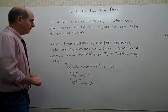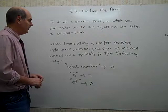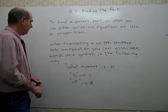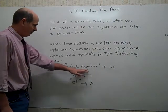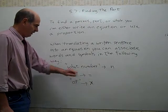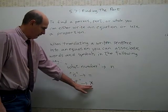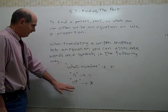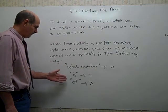If you're going to write an equation, you have to do some translating, and there are certain keywords that most of the time do appear in a sentence that explains the conditions of the problem. When translating a written sentence into an equation, you can associate words and symbols in the following way: 'what number' means pick a letter, commonly N; 'is' means use an equal sign; and 'of' almost always means multiply.